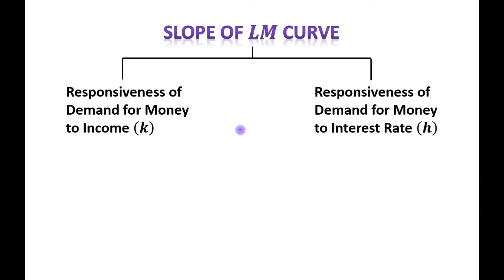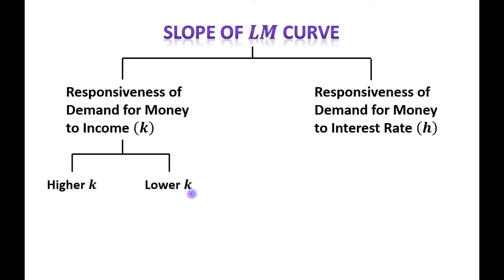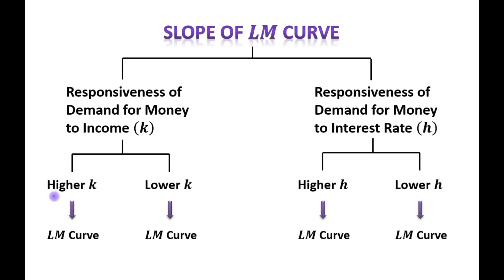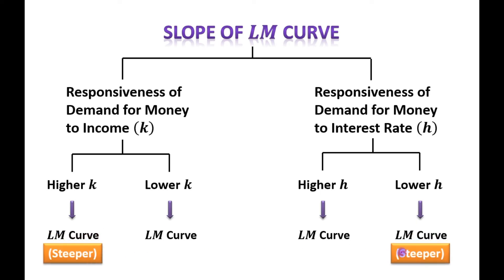We have two cases for each variable: higher value of K and lower value of K, and similarly higher H and lower H. In the cases of higher K and lower H, the LM curve will be steeper.